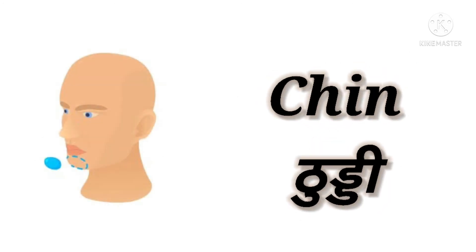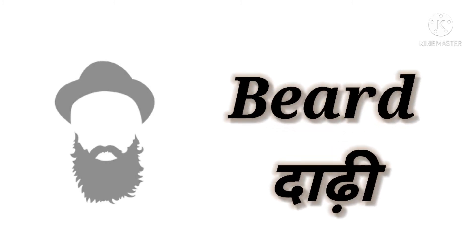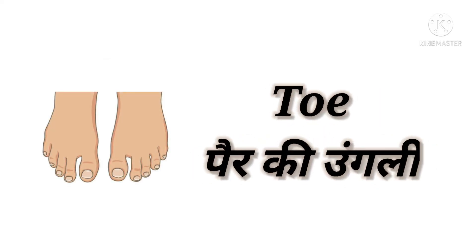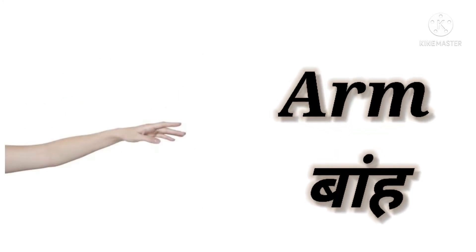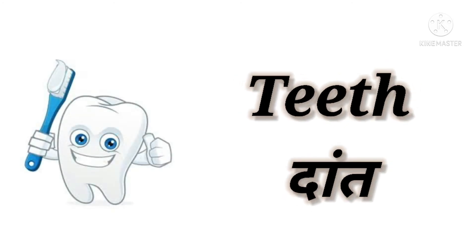Chin yani Thuddi. Mustache yani Mooch. Beard yani Daadhi. Toe yani Pair ki Ungli. Mouth yani Munh. Arm yani Baah. Teeth yani Daant.